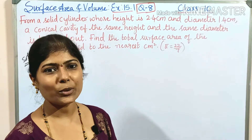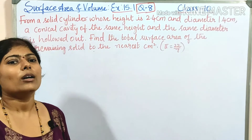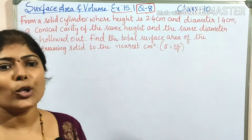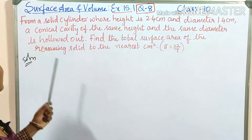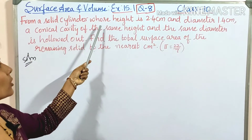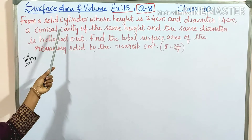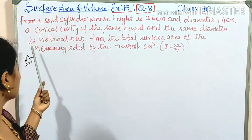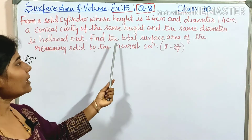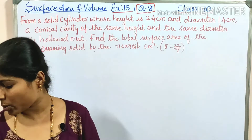Hi, welcome to DBS Math. I'm Deepa Prasad. This is surface area and volume, exercise 15.1, question number 8. From a solid cylinder whose height is 2.4 centimeters and diameter 1.4 centimeters, a conical cavity of the same height and same diameter is hollowed out. Find the total surface area of the remaining solid to the nearest centimeter square.